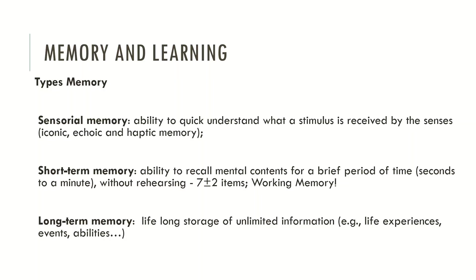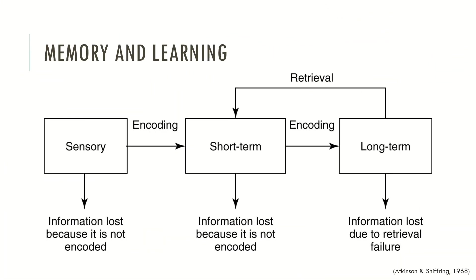We can move to the model of Atkins and Shiffrin, which describes the process model of memory formation. Typically, sensory information passes to the short-term memory, and from the short-term memory, if mental contents are rehearsed, they pass to the long-term memory. However, the information must be encoded through these different stages, and if mental contents are rehearsed sufficiently, they typically pass to the long-term memory.